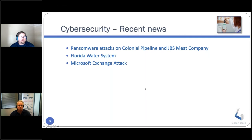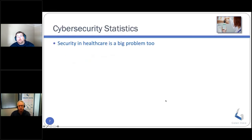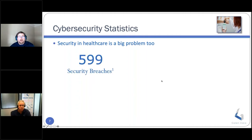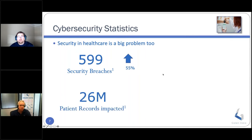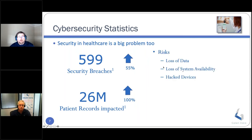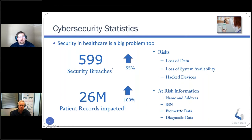These are all major breaches that could have had impacts on human life, particularly the Florida water system. Security in healthcare is a big problem. In 2020 alone, we saw 599 security breaches in the United States, a 55% increase from 2019. The vast majority were caused by hacking, and 91.2% of these incidents resulted in patient records being compromised. This is likely underreported because many breaches go undetected for a long time. The risks include loss of data, loss of system availability, hacked devices, and exposure of sensitive information like names, addresses, social security numbers, biometric data, and diagnostic data.